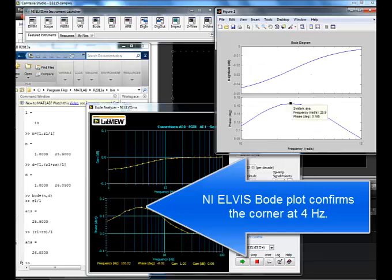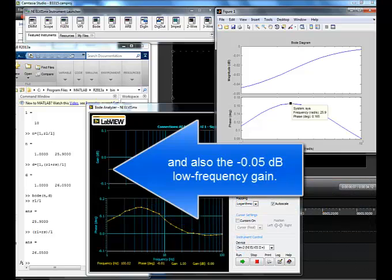This is the NI Elvis Bode plot, which confirms the corner frequency at 4 hertz and the negative 0.05 dB low frequency gain.